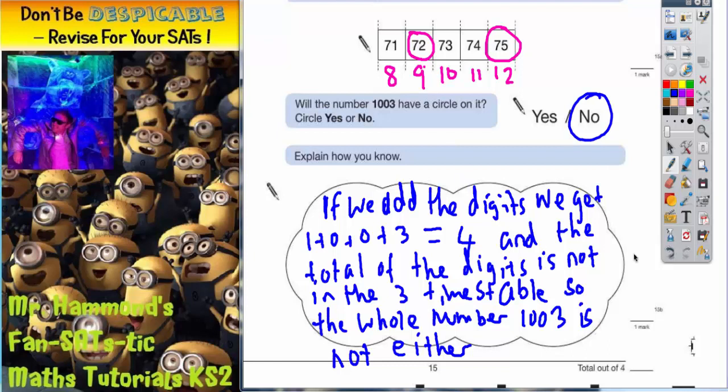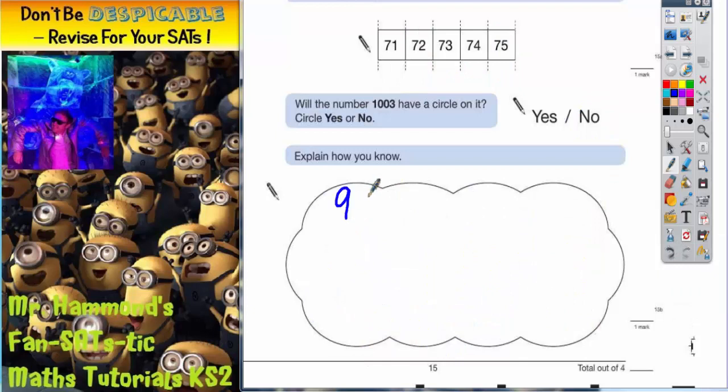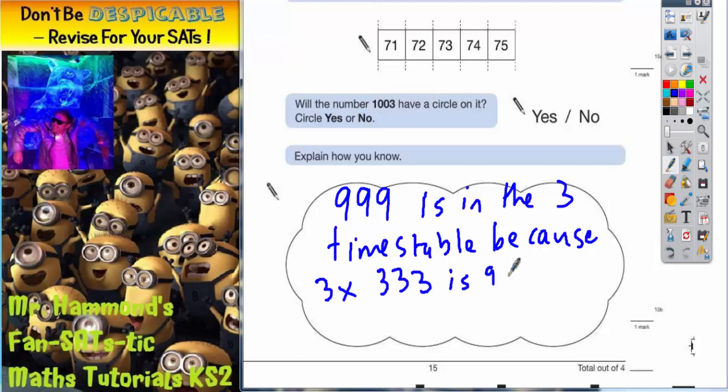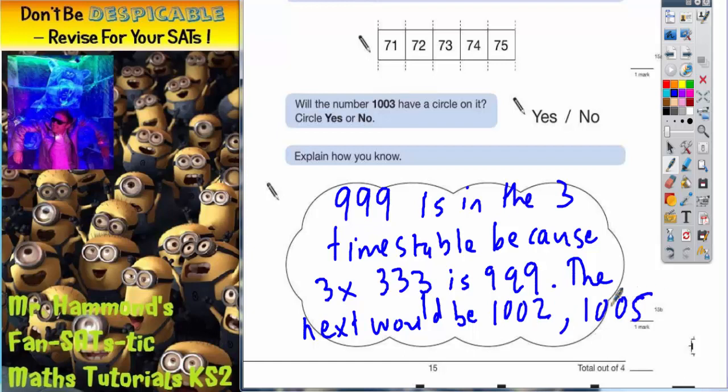There is actually another answer you could have given for that. You could have also said that 999 is in the 3 times table because 3 times 333 is 999. So the next number would be if you add 3 on to 999, it would be 1002, and then the next number would be 1005. Therefore 1003 is not in the 3 times table. That would be a different way of explaining. Both of those answers would be acceptable.